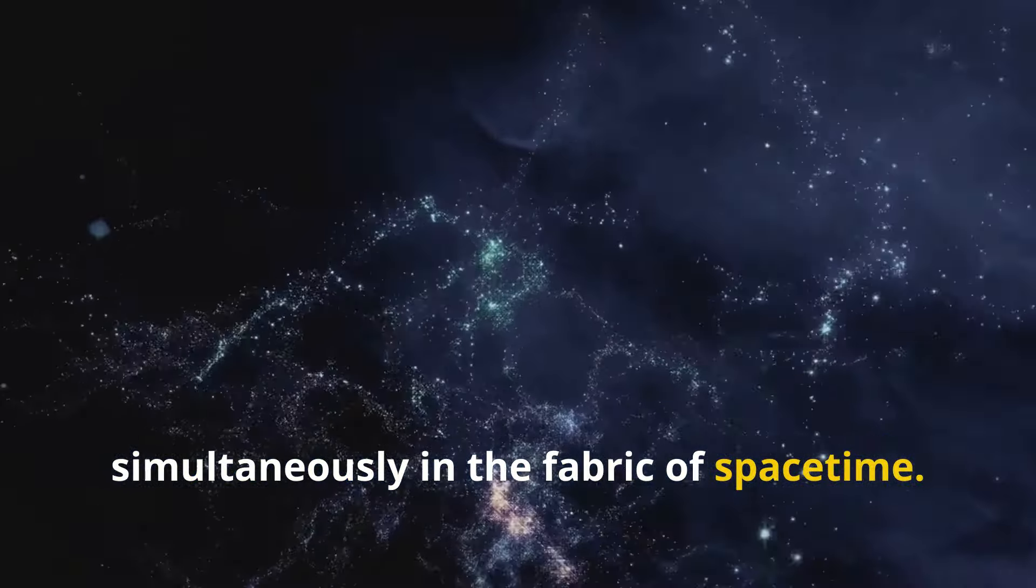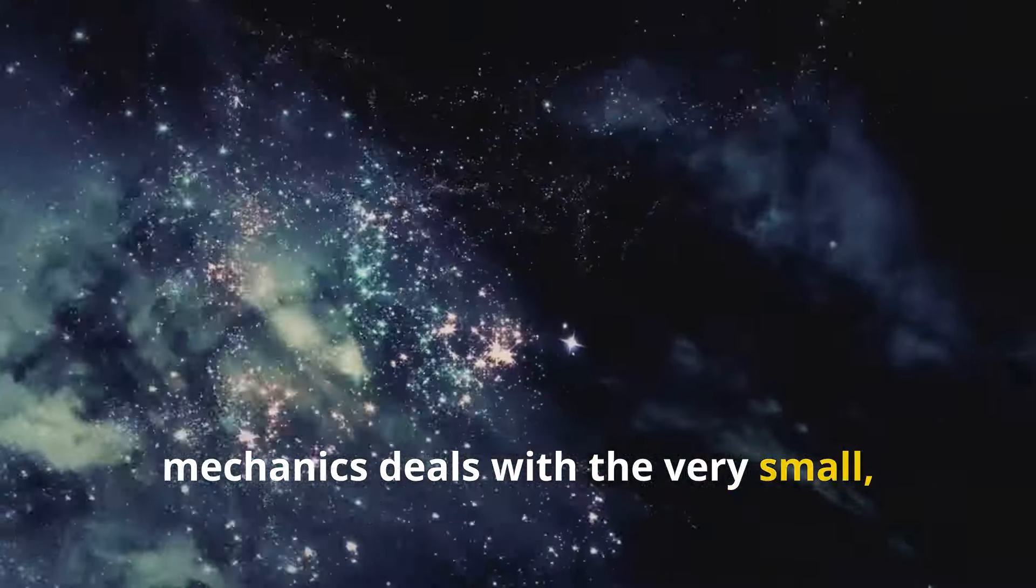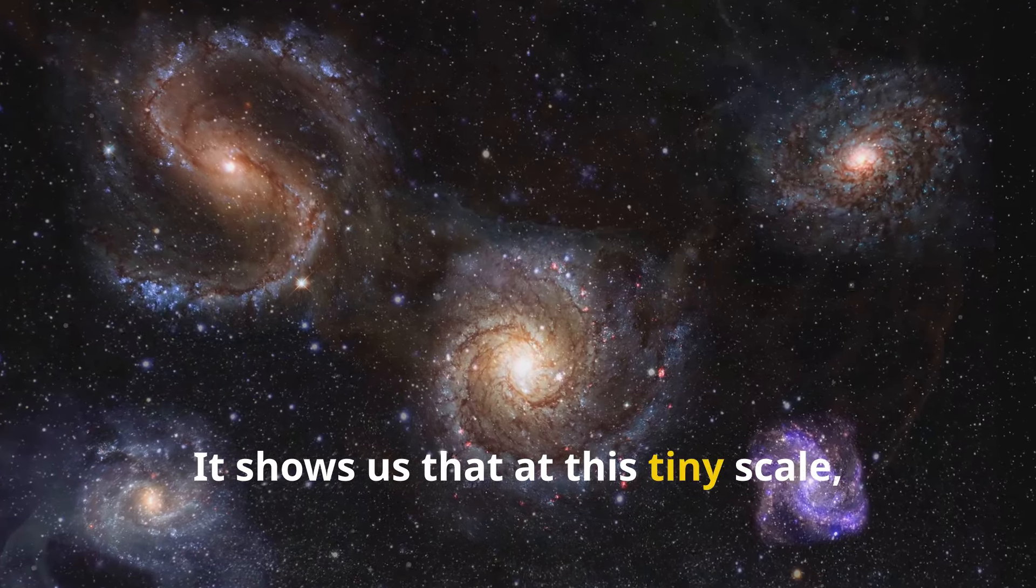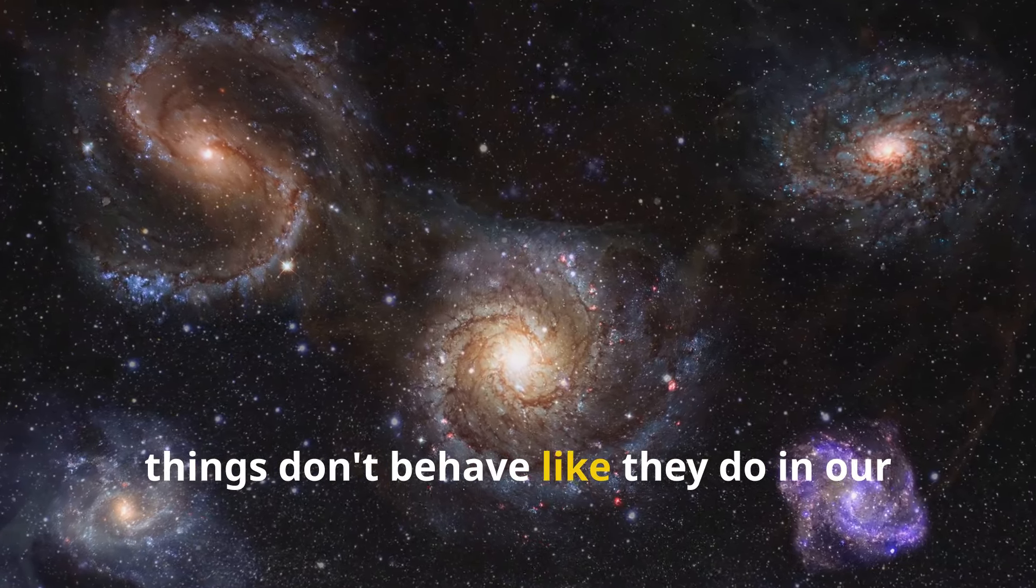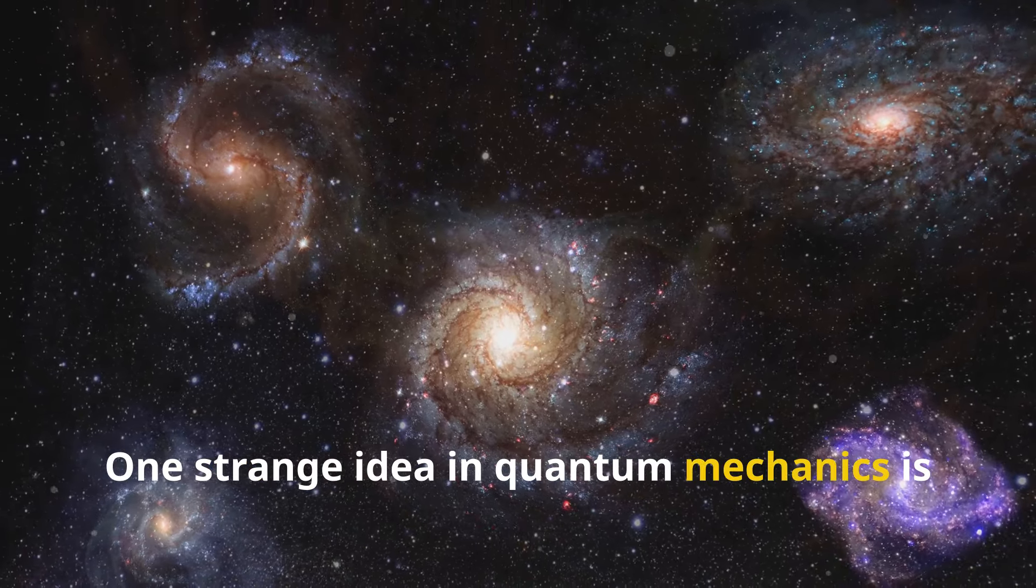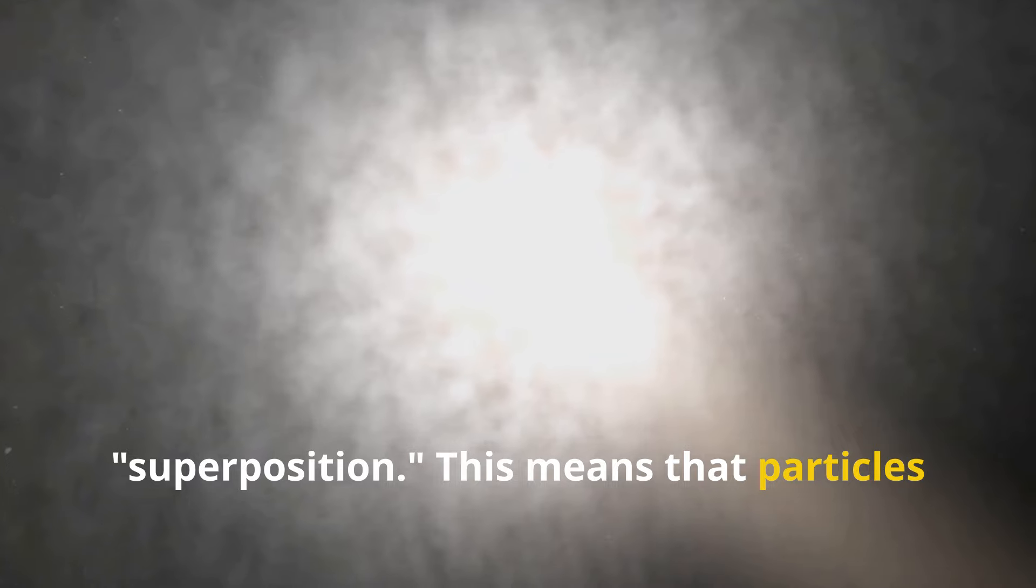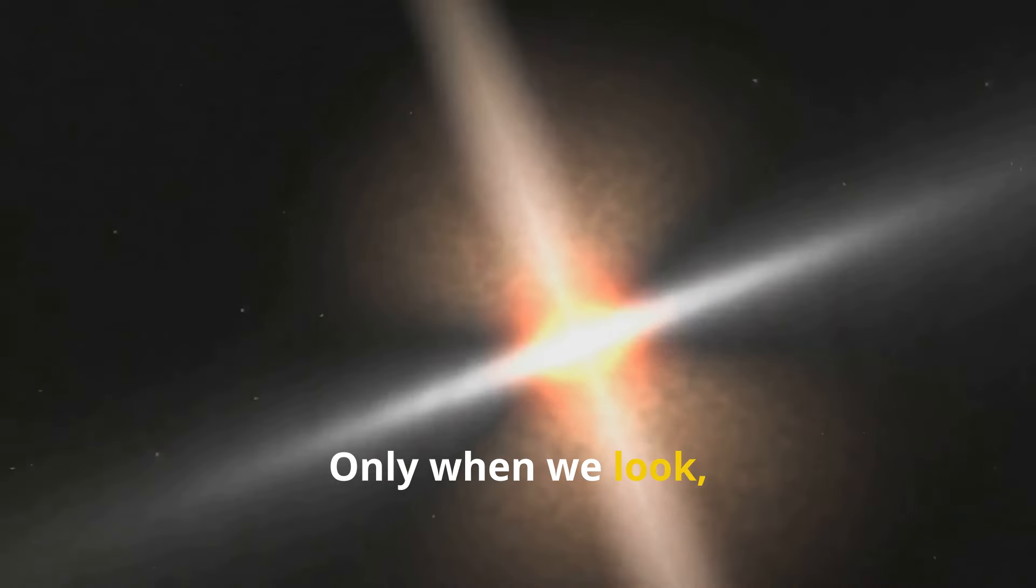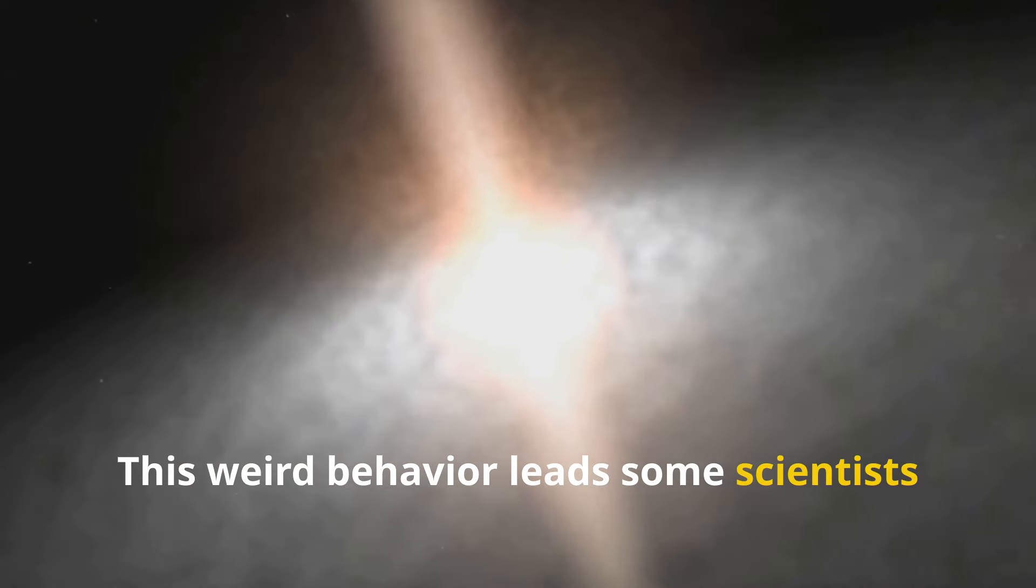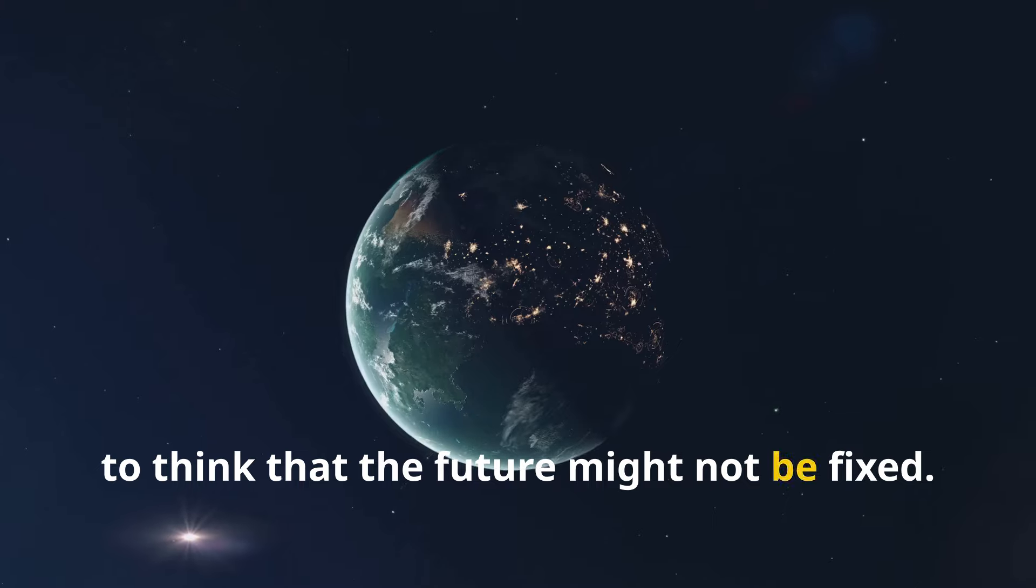Now let's explore another fascinating concept called quantum mechanics. Quantum mechanics deals with the very small, like atoms and particles. It shows us that at this tiny scale, things don't behave like they do in our everyday world. One strange idea in quantum mechanics is superposition. This means that particles can be in multiple states at once until we observe them. Only when we look, they choose a state. This weird behavior leads some scientists to think that the future might not be fixed. Instead, all possible futures exist until we observe them.